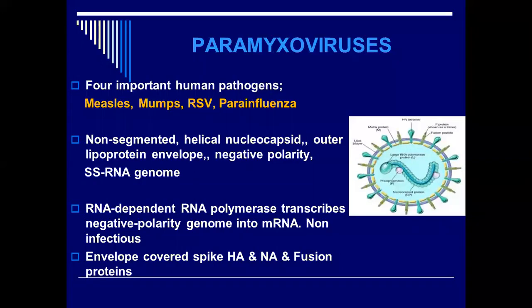We have the paramyxoviruses, and we have four important human pathogens: measles, mumps, respiratory syncytial virus, and parainfluenza viruses. Today we will discuss first the generalized properties of this group of viruses.